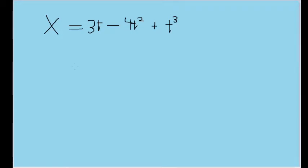In this problem, we have a function telling us the position of an object as it moves along the x-axis, given by this formula: X = 3t - 4t² + t³, where x is in meters and t is in seconds.